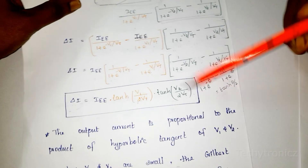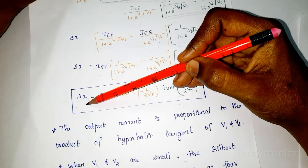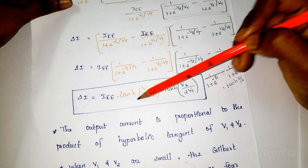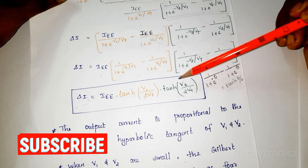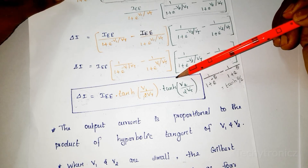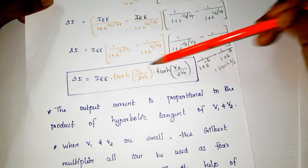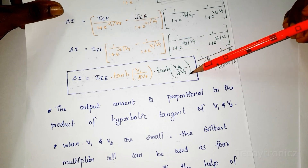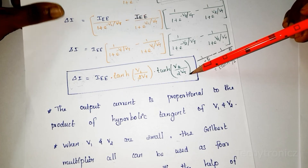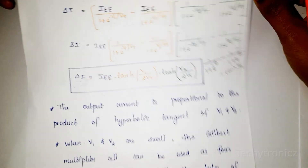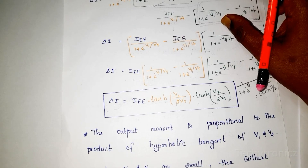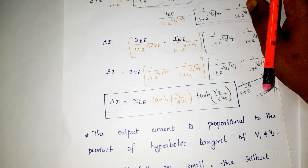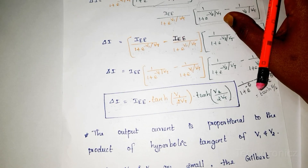The output current is proportional to the product of the two input voltages, confirming this is an analog multiplier. This is the output current of the Gilbert cell multiplier. When V1 and V2 values are small, the Gilbert multiplier cell can be used as a four quadrant multiplier, with the help of an I-to-V converter. I hope you can understand this concept. For more videos, please subscribe to the channel. Thank you.